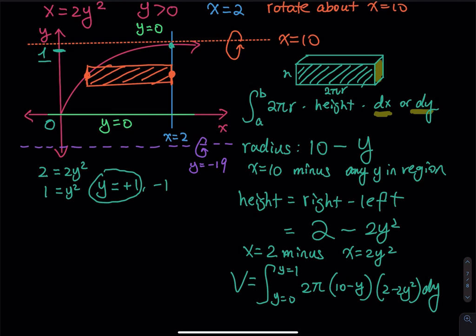So when you have that, the radius is the distance between the orange rectangle and the revolution axis, which is you use the big y minus small y. So that will be any y minus y equals negative 19.